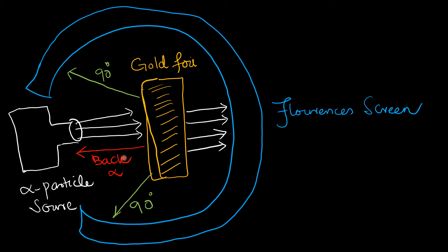On the basis of the gold foil experiment, Rutherford proposed that the major part of an atom is empty space, the atom consists of a center called the nucleus which is positively charged, and some alpha particles are deflected at a smaller angle because they were incident on the side of the nucleus.